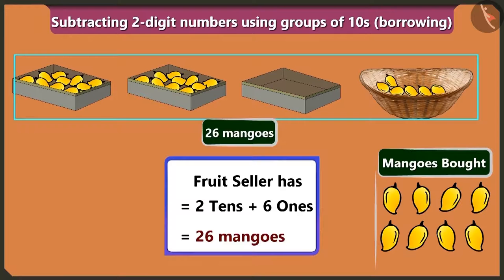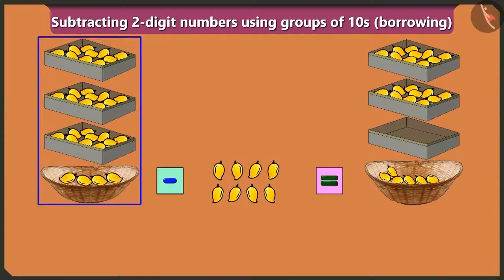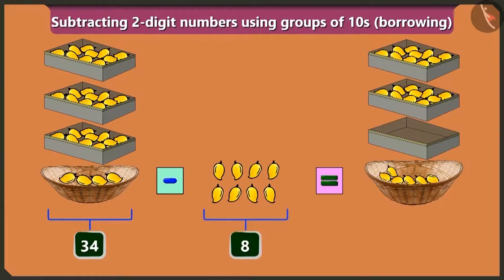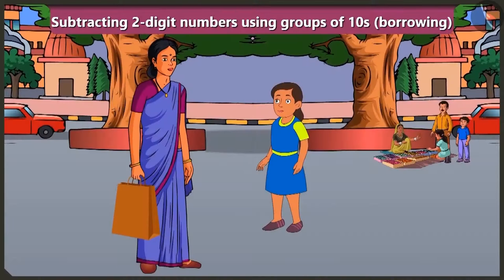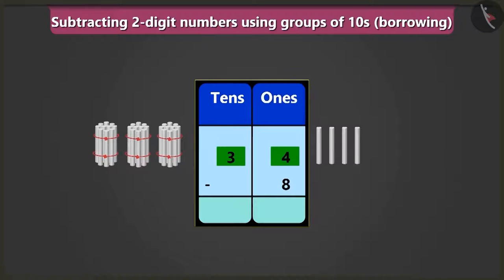Yes. So Bubbly, we subtracted eight mangoes from thirty-four mangoes, so now there are twenty-six mangoes. It means thirty-four minus eight equals twenty-six mangoes. Mummy, how is subtraction done? Come, I will explain. Look, to subtract eight from thirty-four, we will write thirty-four and eight in the boxes of ones and tens. Thirty-four means three tens and four ones. Now we have eight ones, so we will write it in the box of ones.